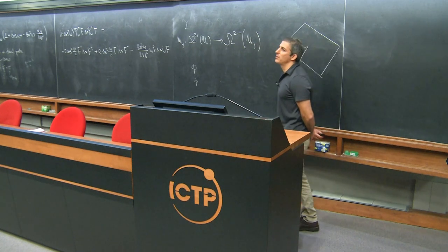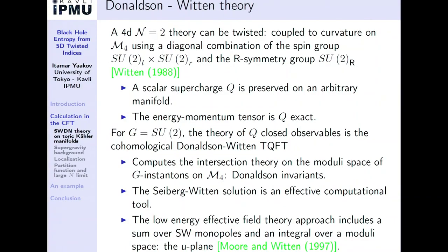There is an approach to computing Donaldson-Witten invariants that I won't touch at all, but perhaps is the right way to do this — the low-energy approach. You take the Seiberg-Witten solution of the SU(2) theory, or some higher-rank theory, and compute everything using the solution by taking the manifold to be very large. An important paper on this is the one by Moore and Witten. The contributions come from an integral over a complex modulus — the U-plane — and over some discrete solutions called Seiberg-Witten monopoles. I'm mentioning this to say that perhaps this is the right way of doing this, not the way I'm going to present.